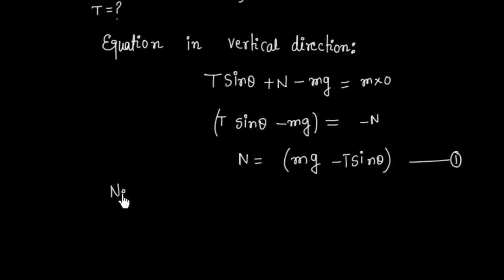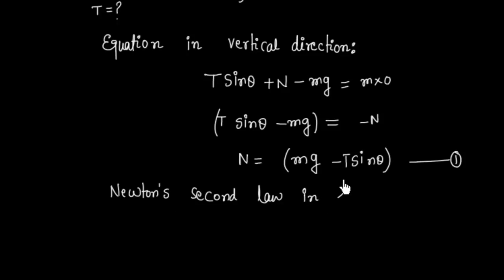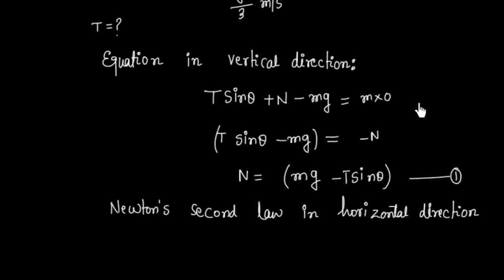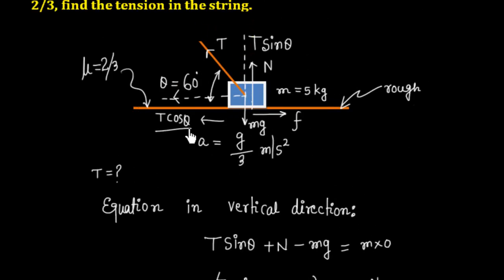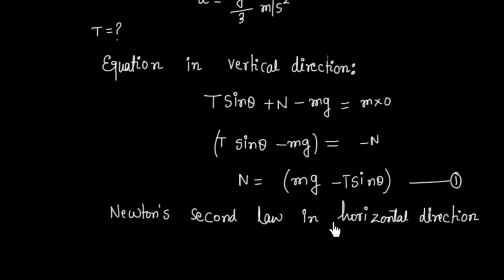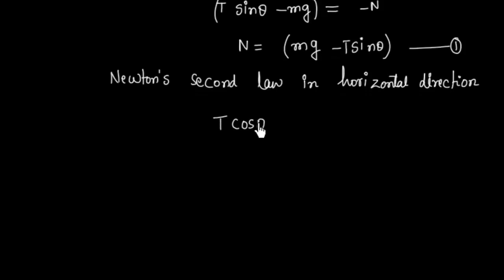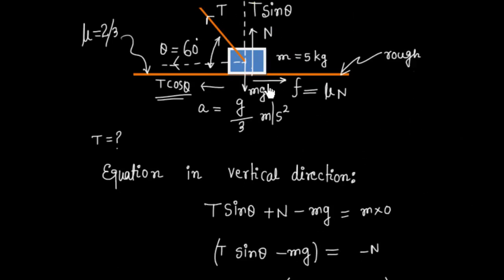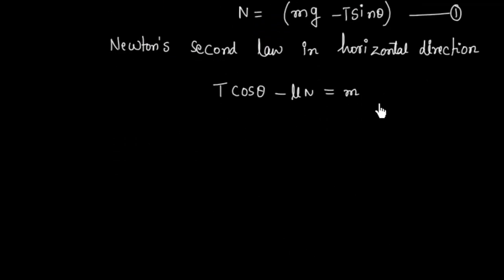Applying Newton's Second Law in the horizontal direction: T cos theta minus friction force f equals mass times acceleration. Friction is given by mu times N. So we write: T cos theta - mu·N = m·(g/3), where acceleration is g/3 as given.